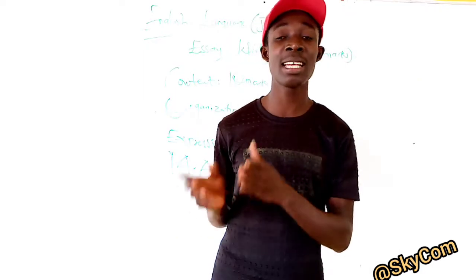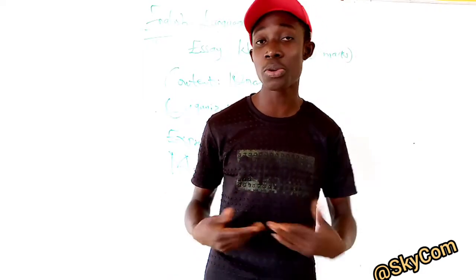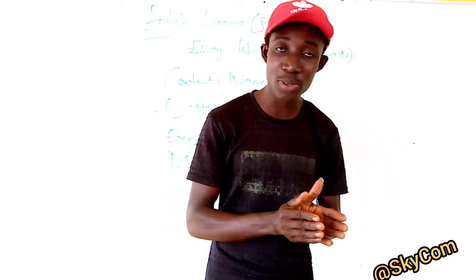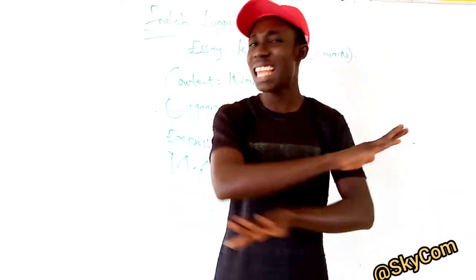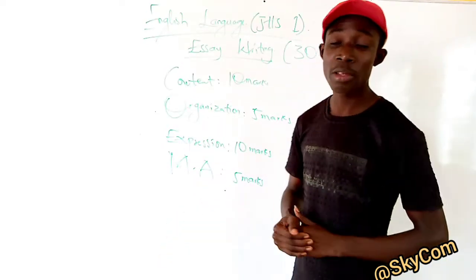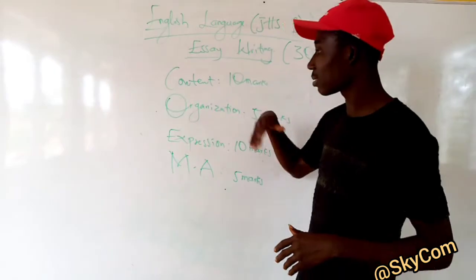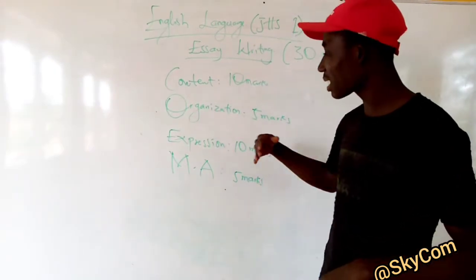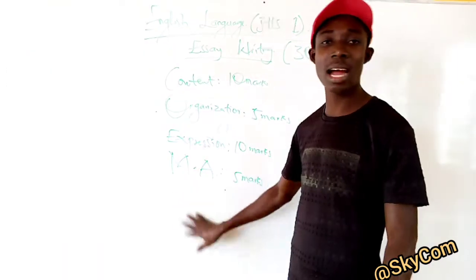In everything there are do's and don'ts. When you're coming to school, there are certain things you're supposed to do and things you're not supposed to do. For example, you must use a pen. So when writing an essay, I'll tell you things that you must follow: the content, the organization, the expression, and the mechanical accuracy.